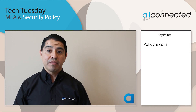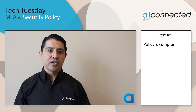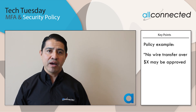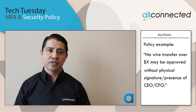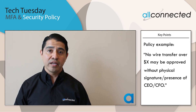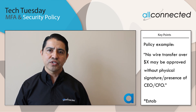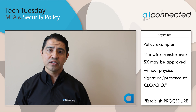For example, it may be beneficial to implement a policy that no wire transfer that exceeds a predetermined amount may be approved without a physical signature from the CEO. Specify when a digital signature is and is not appropriate, and outline a procedure for reporting suspicious requests regardless of who initiates the request.